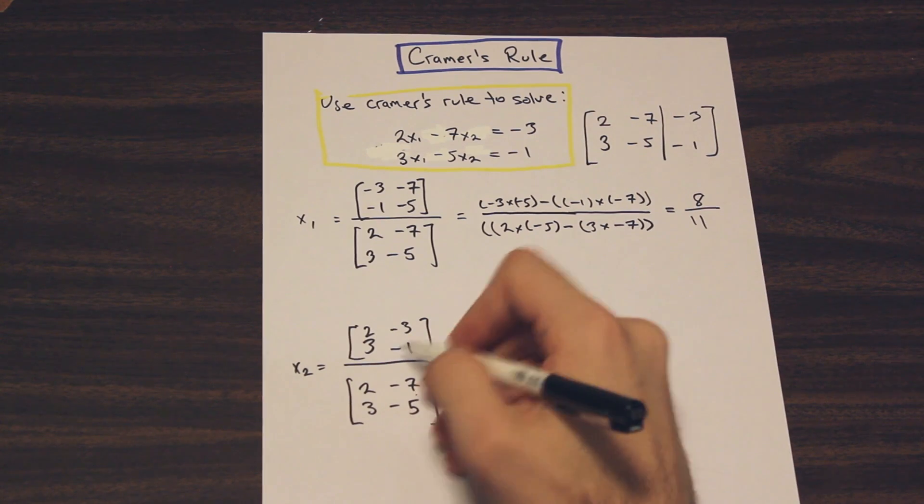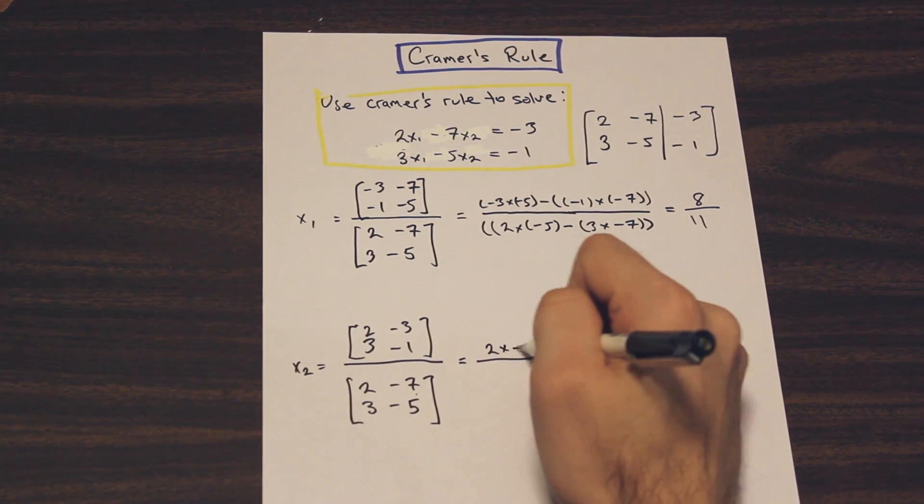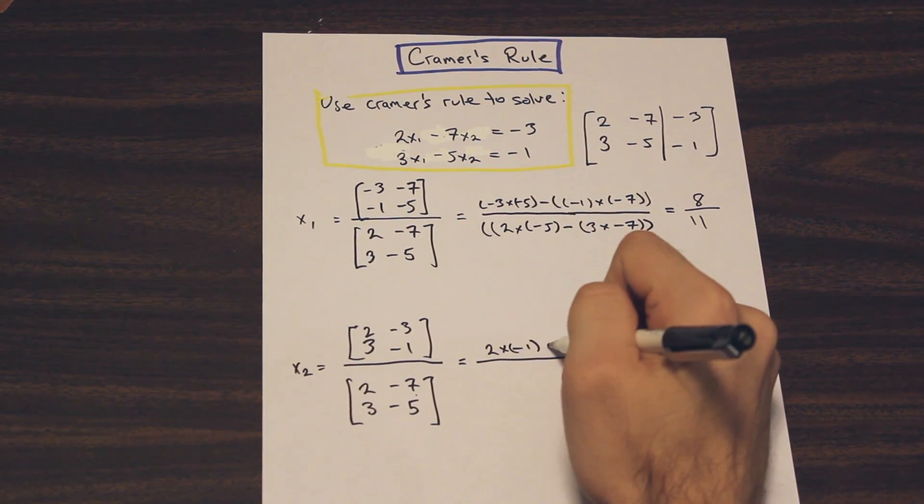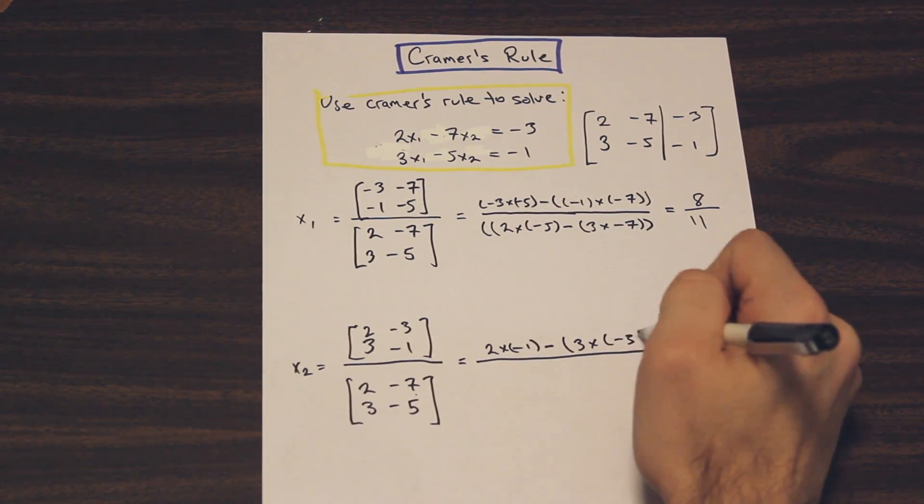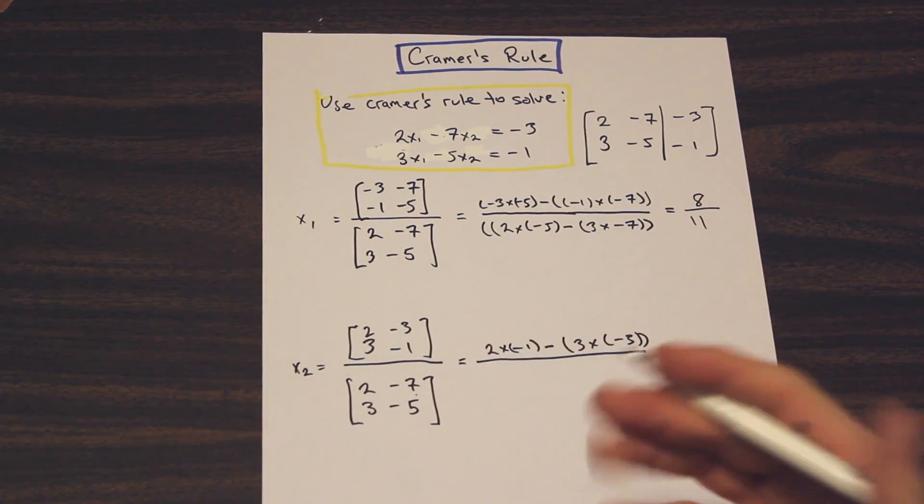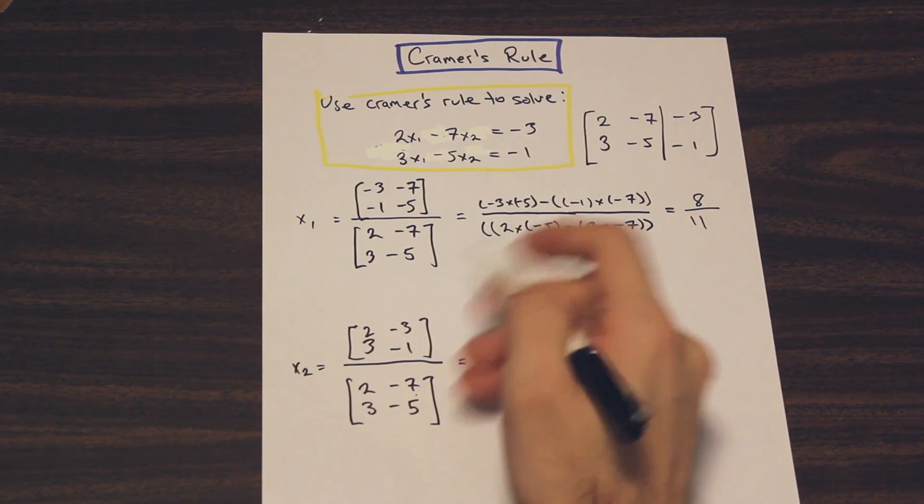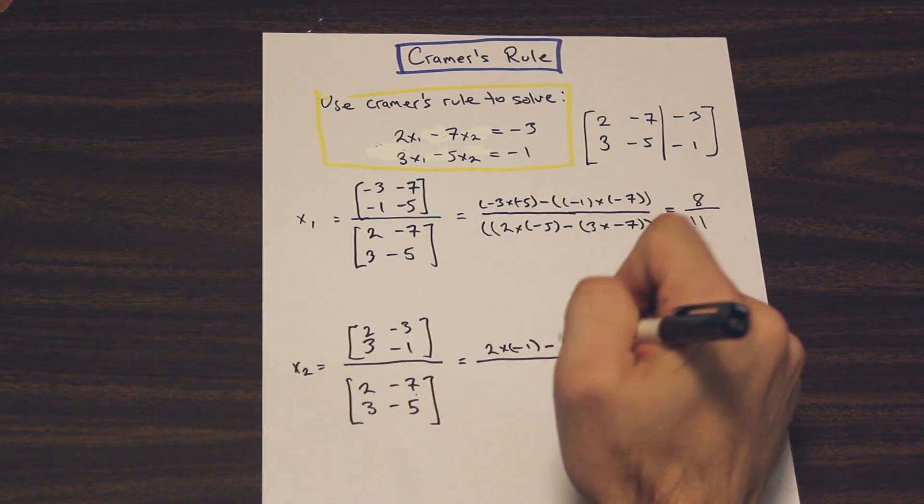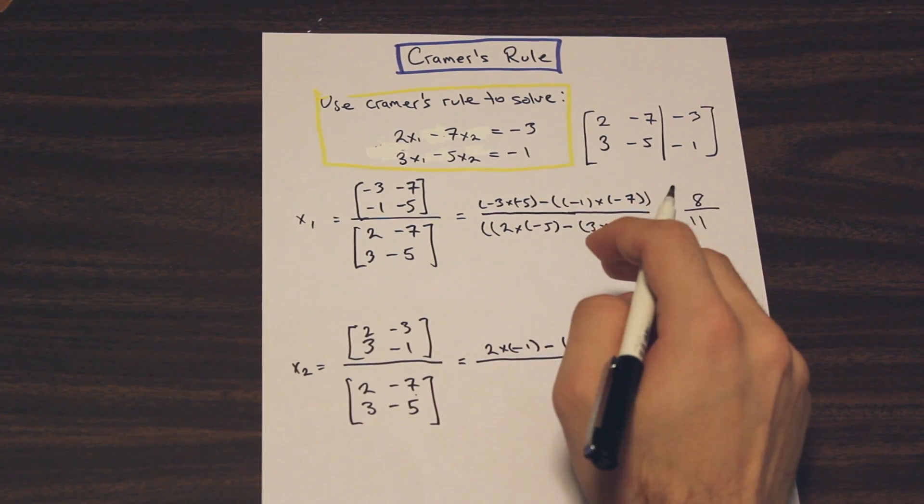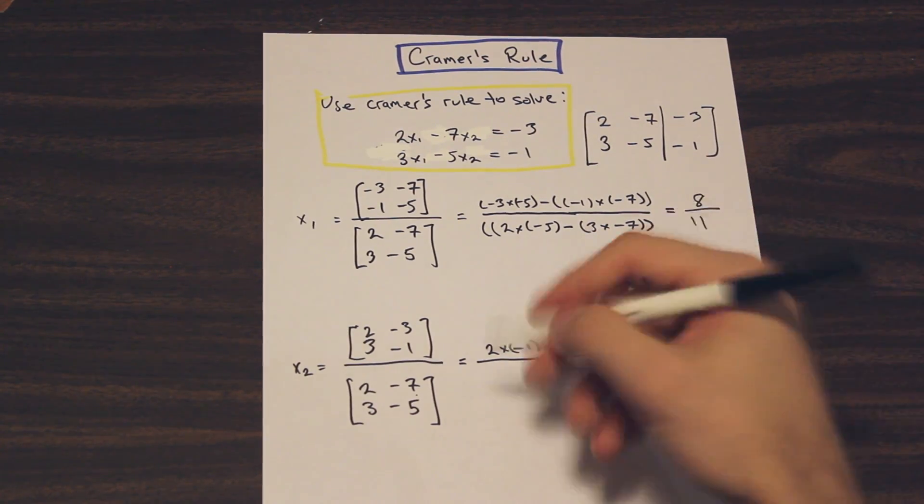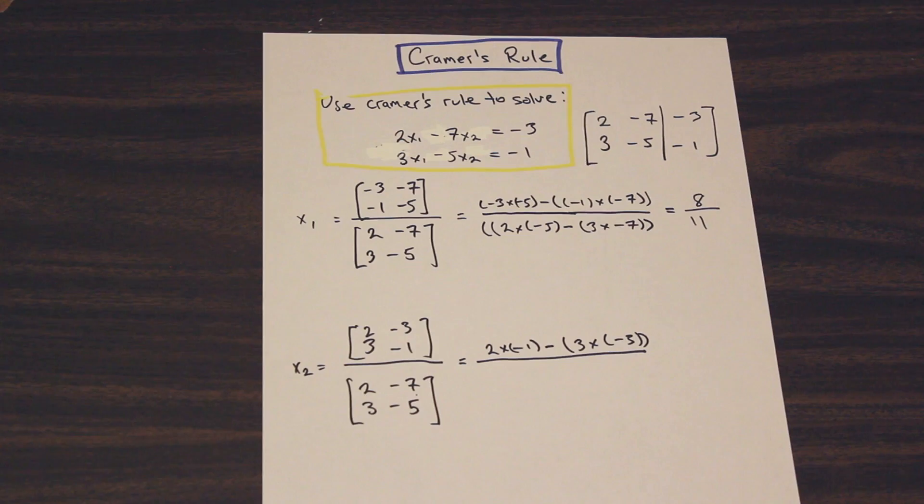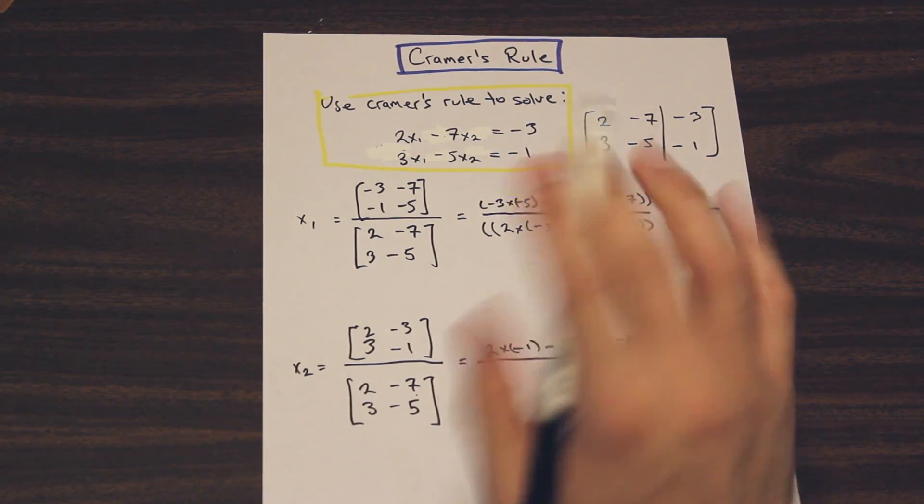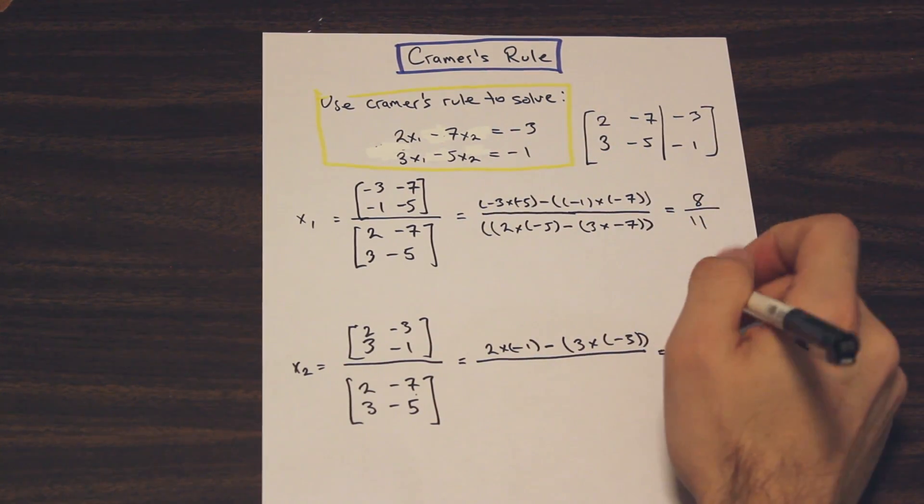Let's do the same thing for x2. We have 2 times negative 1, and that's going to be minus 3 times negative 3. So in these kind of questions, you can, a lot of the times, make errors with the negative signs. If you do it in your head, there's a good chance that you're going to make a small mistake and get this really easy question wrong. So I like to just write this out and put it into my calculator step by step with all the negatives and see what I get. That's the best way to do it. Don't do it in your head.